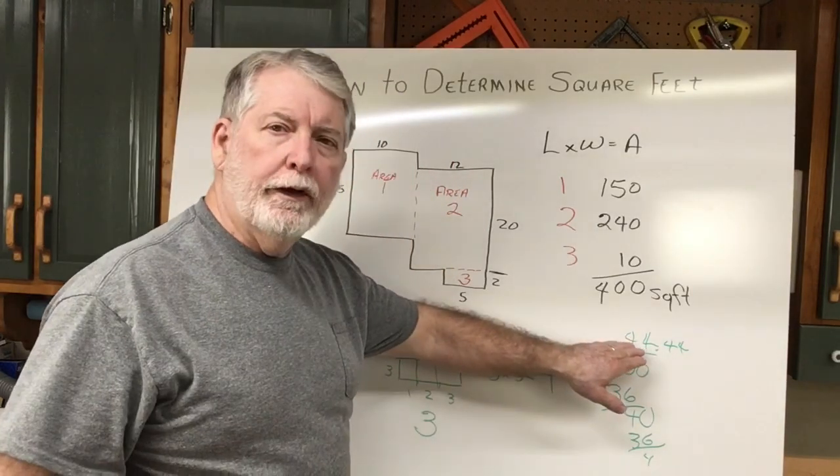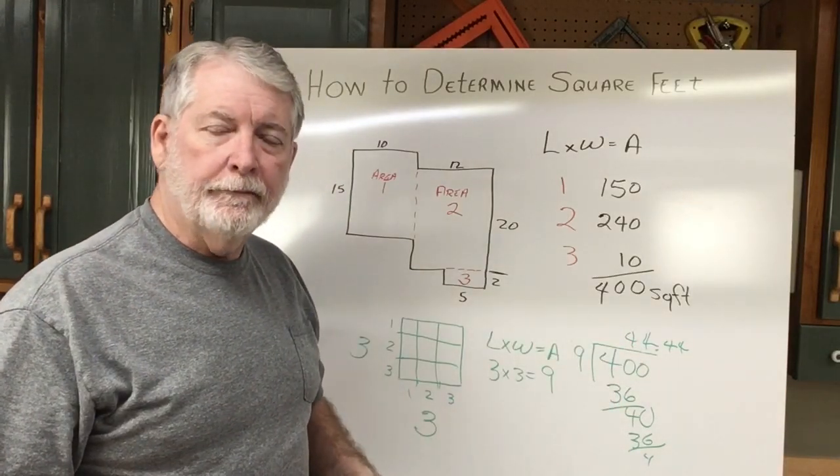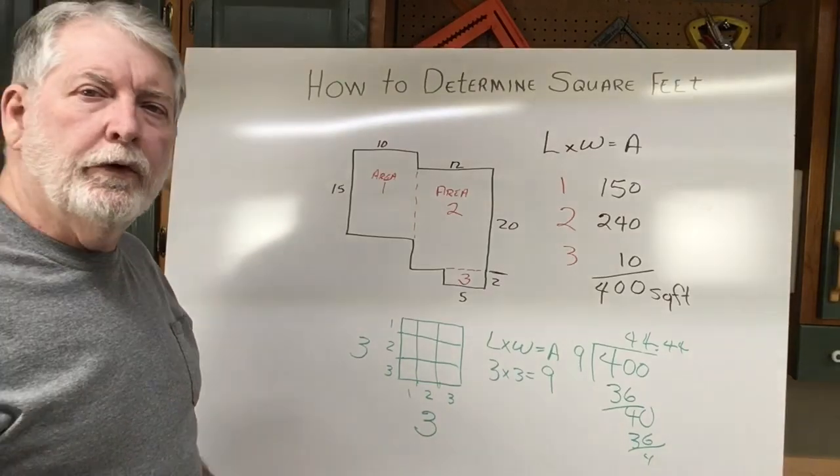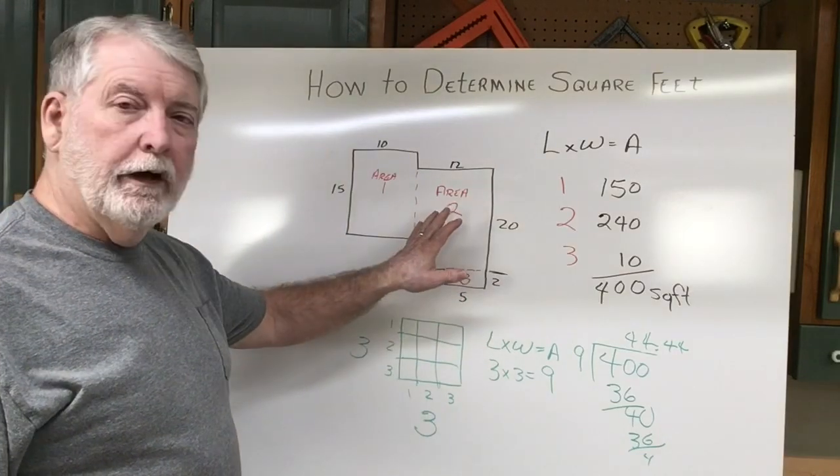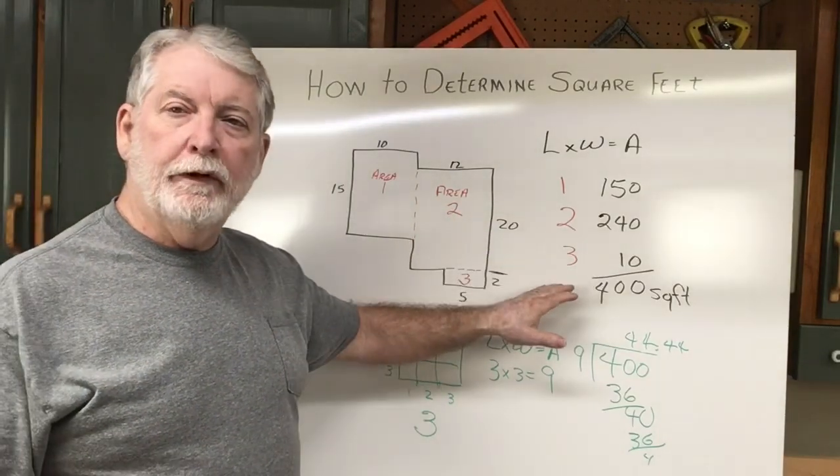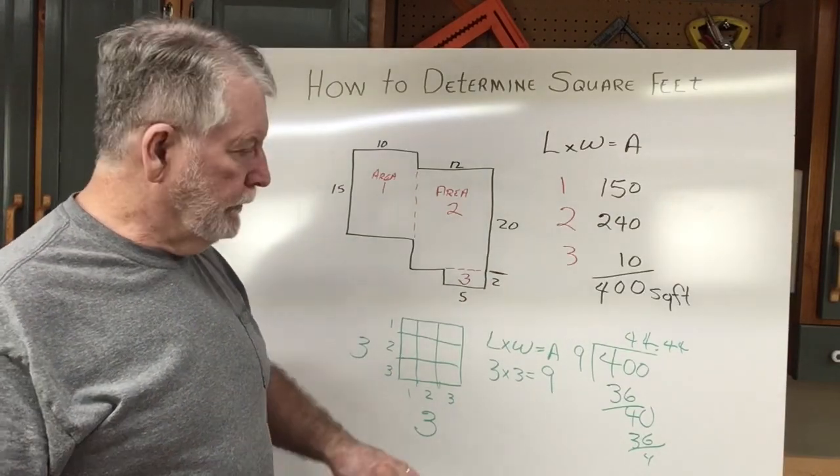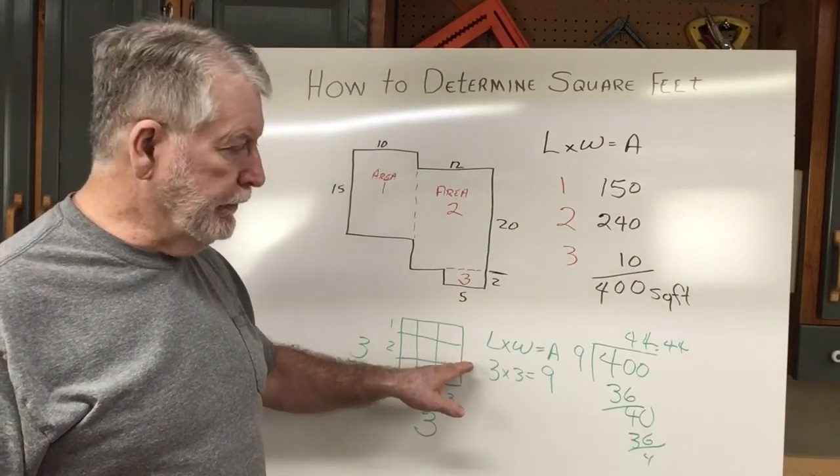So there's actually 44 yards. And we'd round that up again to 45 yards. And the 400 square feet. So this is a real easy way to be able to calculate the square footage of a room. So you can determine exactly how much flooring that you would need to buy. And if you wanted to be able to convert it over to yards, I gave you the very easy step-by-step method to be able to do that.